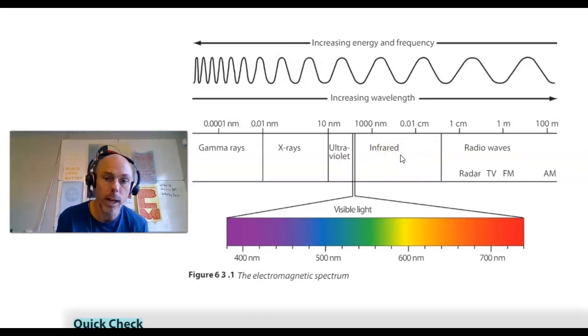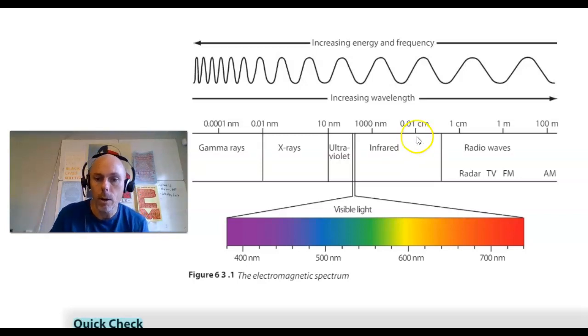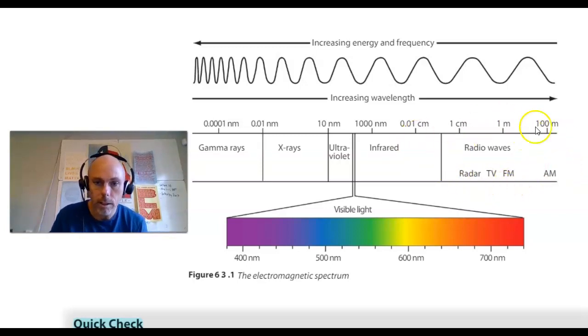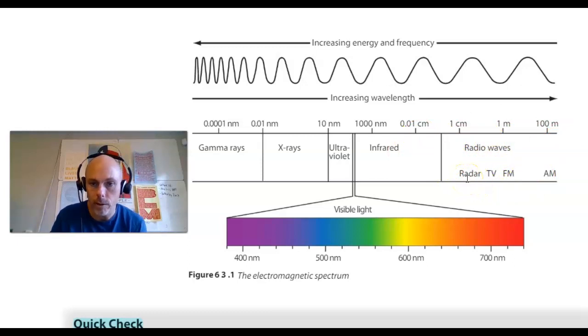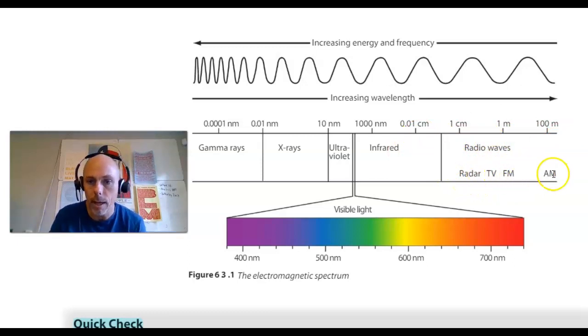Infrared is lower energy than visible light — it literally means lesser than red. The lowest energy waves with very long wavelengths up to a mile long are radio waves, which comprise radar, TV, FM, and AM — AM being the lowest energy radio waves of all.